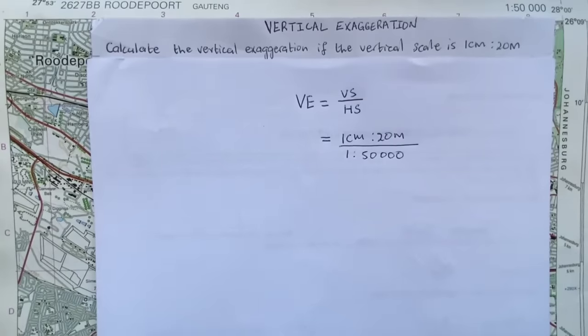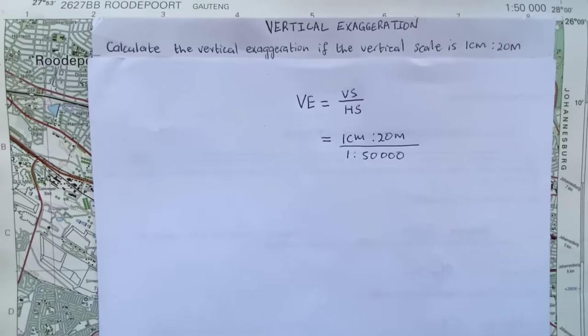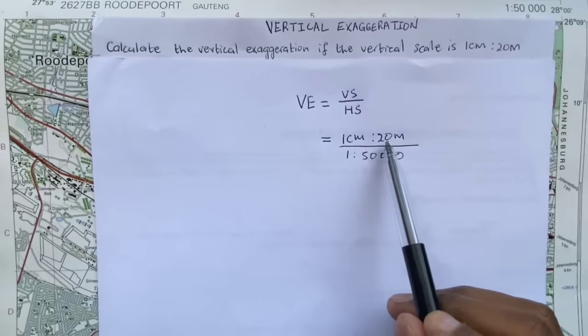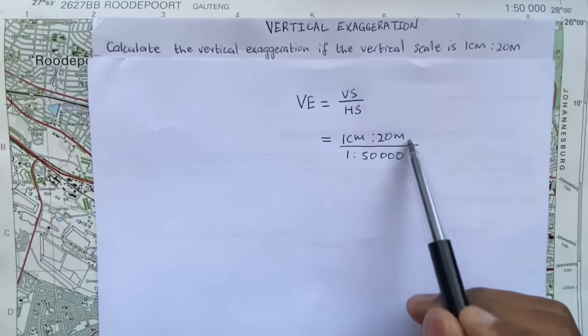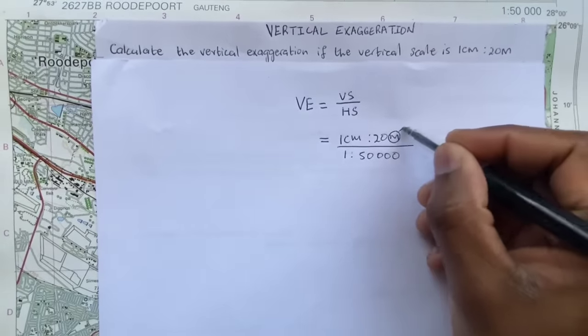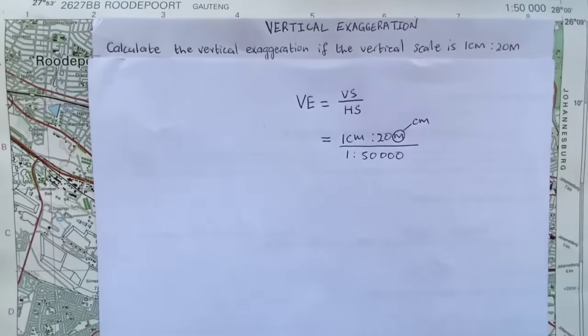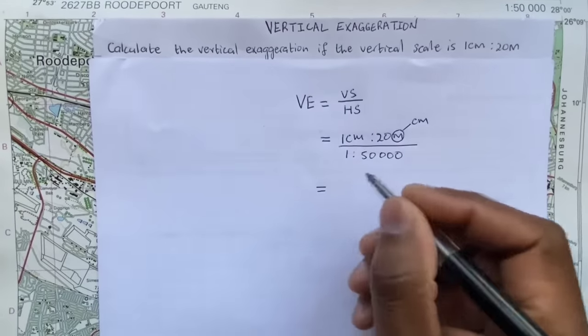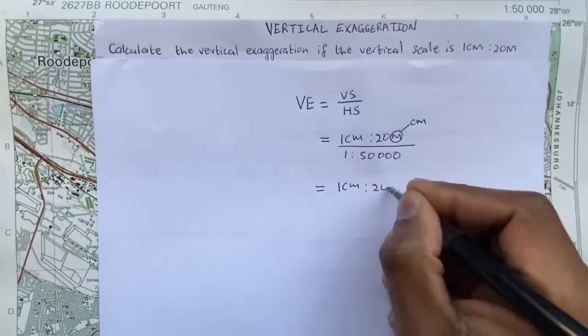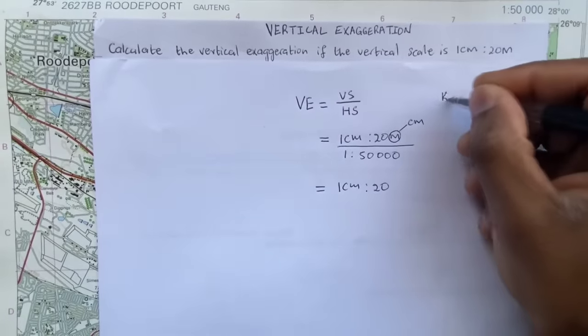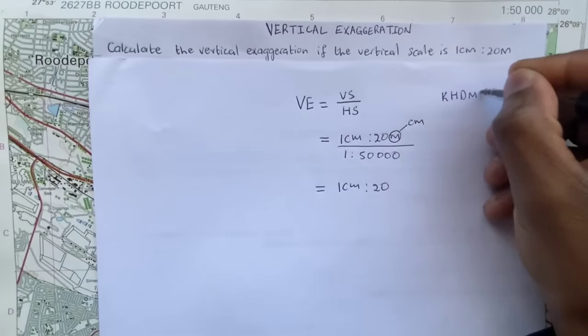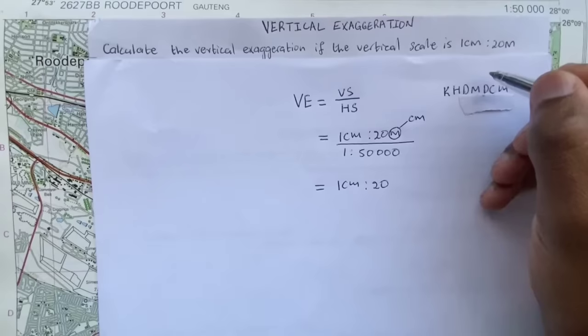Note that the scale of the map says that one centimeter represents 50,000 centimeters. So in my solution I need to ensure that everything that I'm working with is in centimeters. And as you can see here I have one centimeter and 20 meters over here.